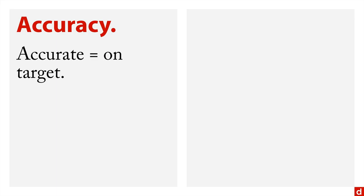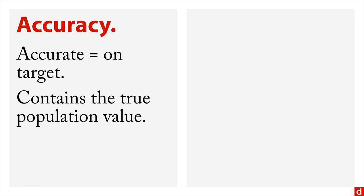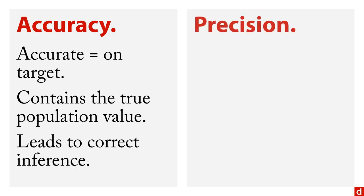There's a fundamental trade-off between accuracy and precision. Accuracy means you're on target, or more specifically that your interval contains the true population value, leading you to the correct inference.